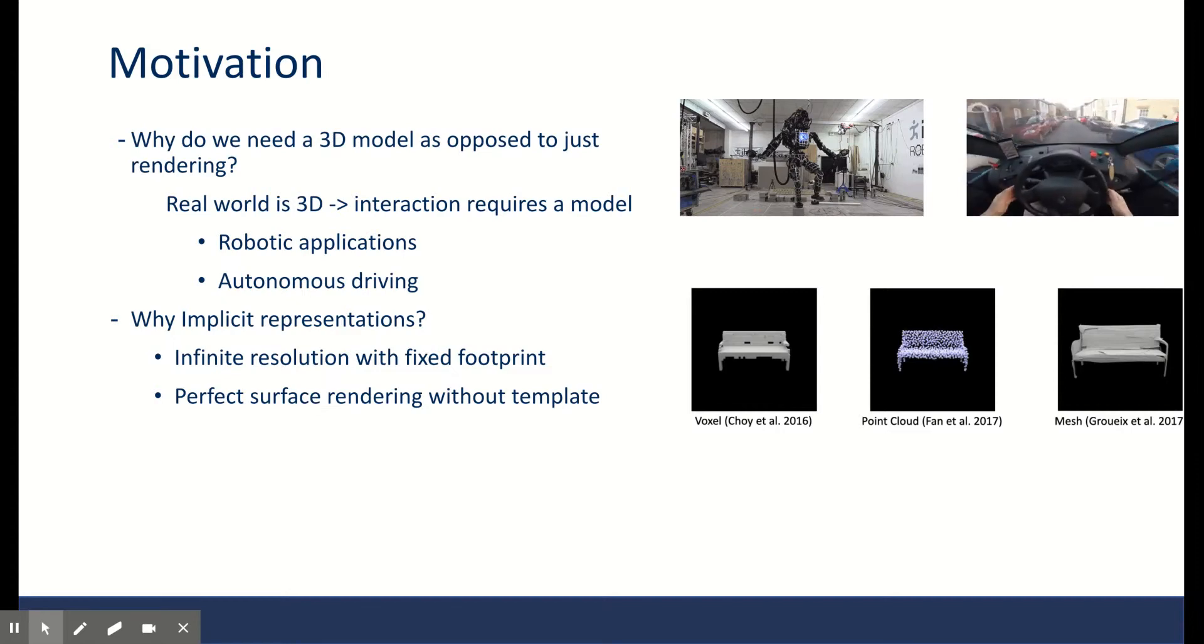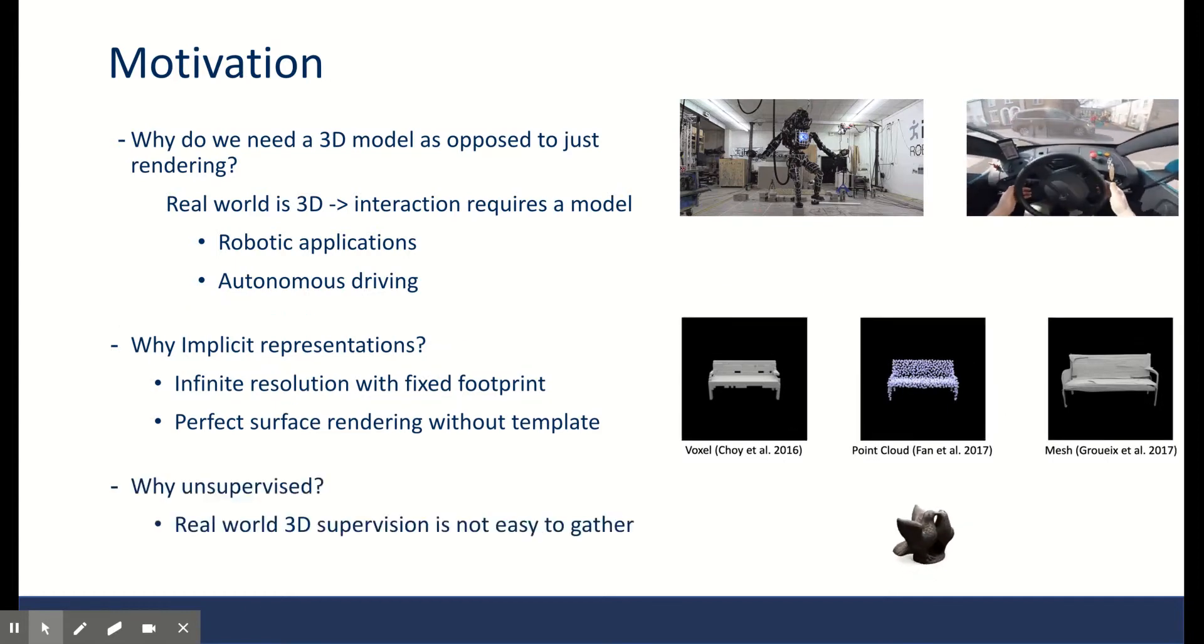The main motivation for focusing on implicit representation is that they are able to render at any resolution with a fixed memory footprint. They also have many benefits over point clouds and meshes, including not relying on templates and not having lossy renderings. The reason they are looking at unsupervised implicit 3D modeling is that in real-world scenarios, you cannot rely on having 3D supervision. To scale to larger and more complex realistic datasets, you need to be able to learn unsupervised.